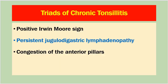Chronic tonsillitis is diagnosed by a triad — that is, there are three symptoms and signs. They are: positive Irwin's sign; persistent jugulodigastric lymphadenopathy, which may be painless because there is low-grade infection of the tonsils ongoing, leading to persistent jugulodigastric lymphadenitis; and congestion of the anterior pillars. If you look at the anterior pillars, they are congested because the tonsils are infected in their substance or at the tonsil base.